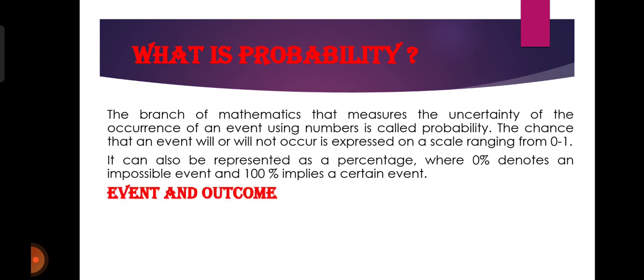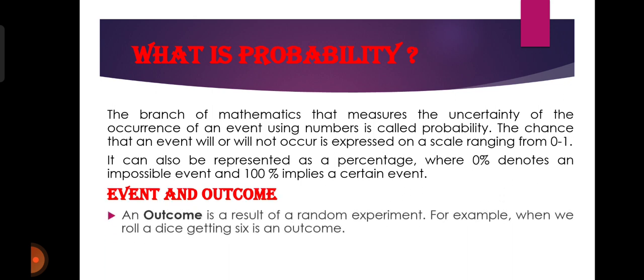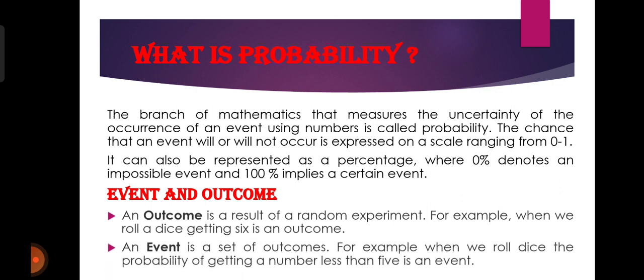यहाँ पर हम दो terms study करेंगे — पहला आता है event और एक आता है outcome। पहला outcome की बात करते हैं: outcome is a result of a random experiment. आपने कोई भी random experiment perform किया, और उस random experiment का जो result निकल कर आया, वो outcome कहलाएगा। जैसे कि जब आपने एक dice को throw किया, roll किया, तो उसमें आपको 6 मिल गया — उसका outcome हो गया।